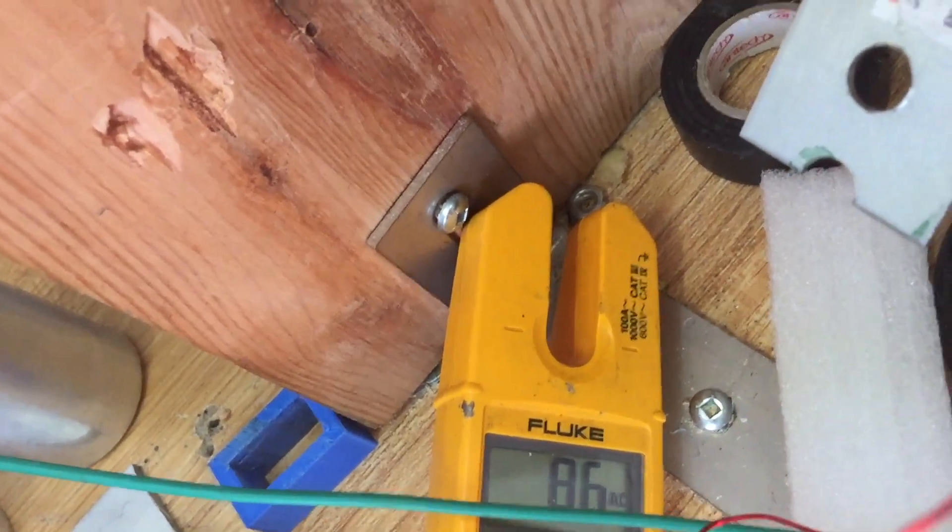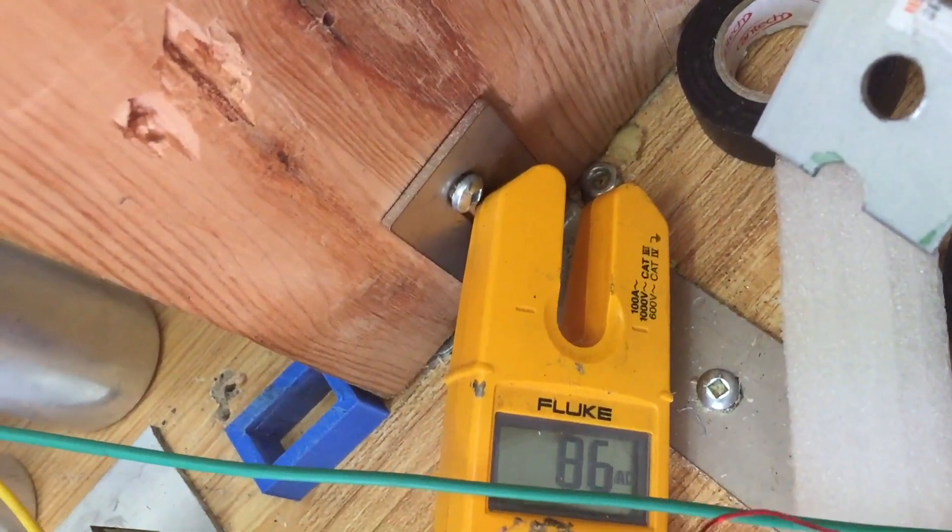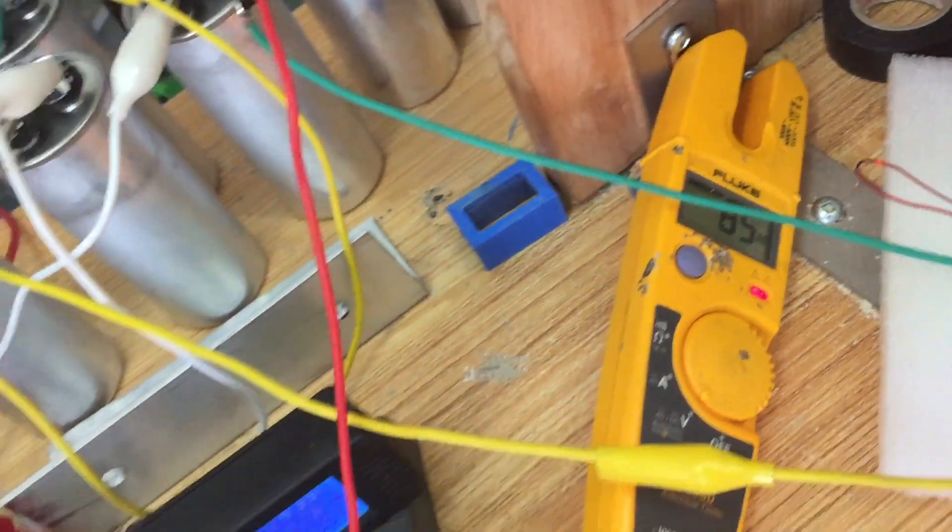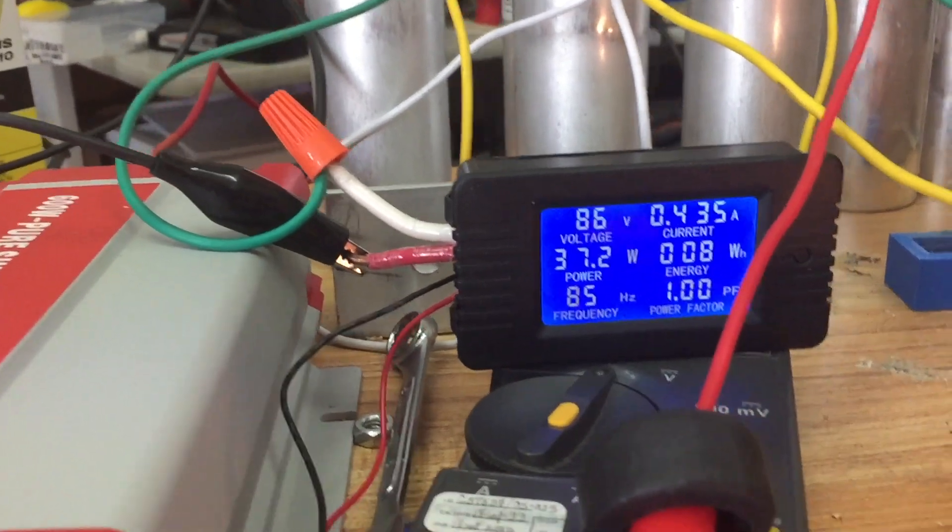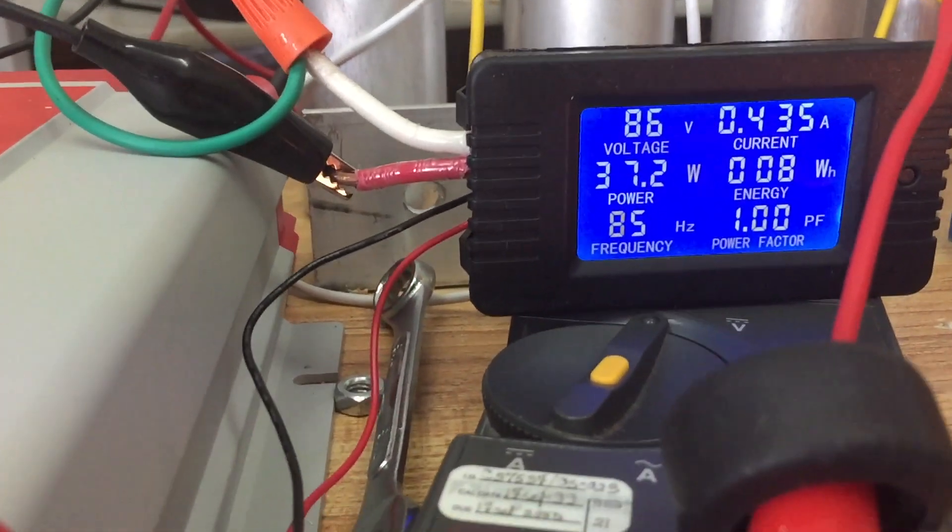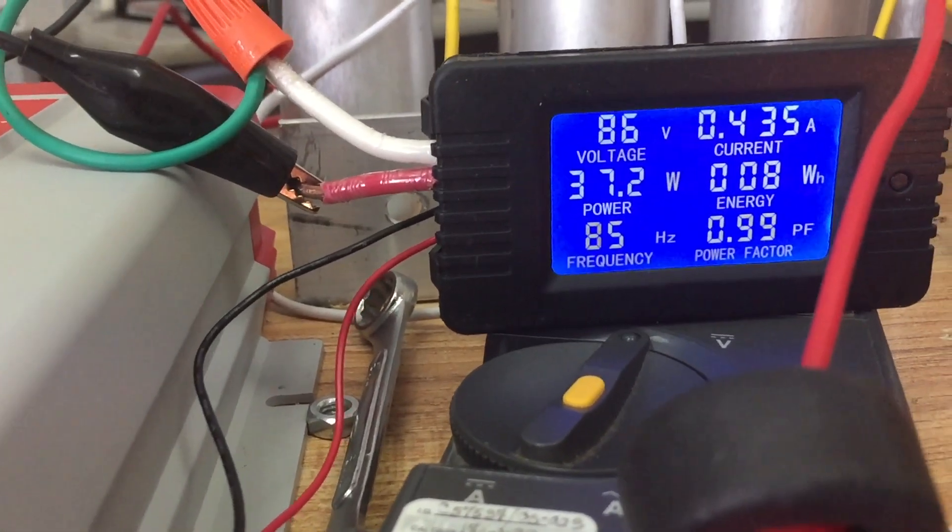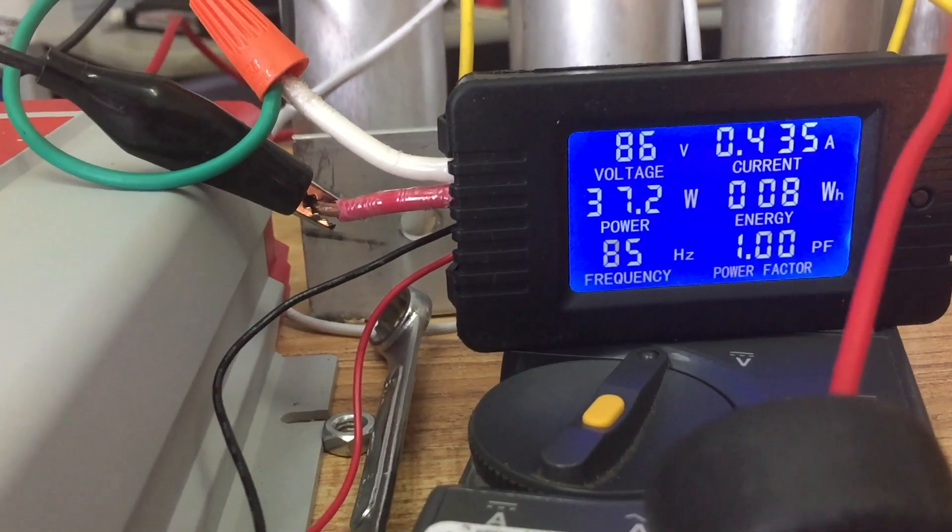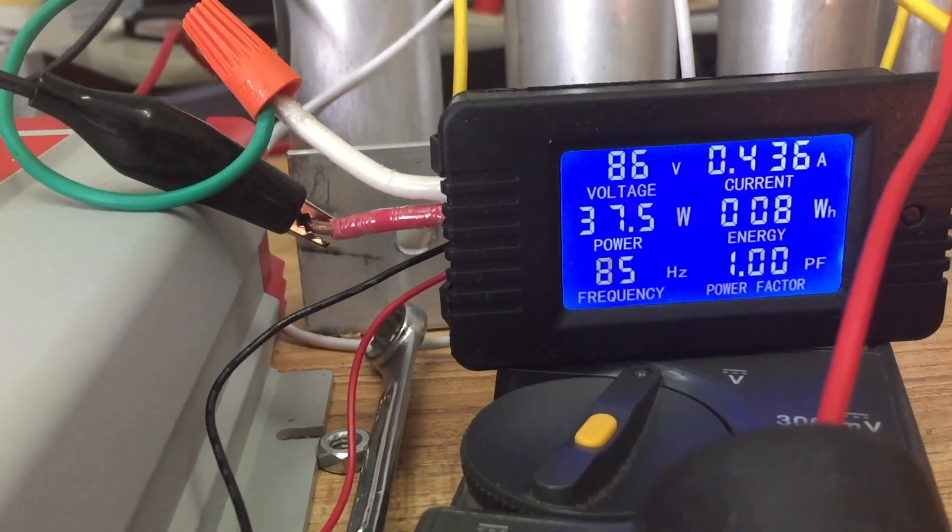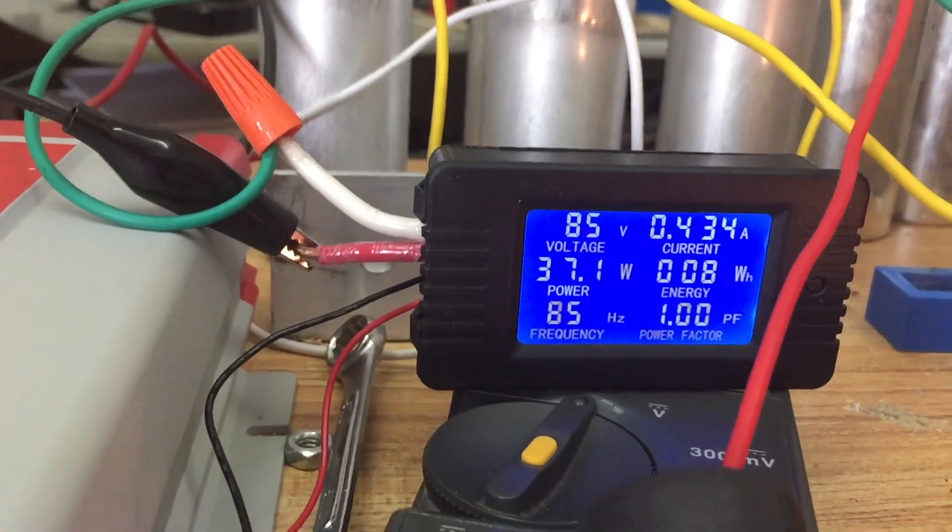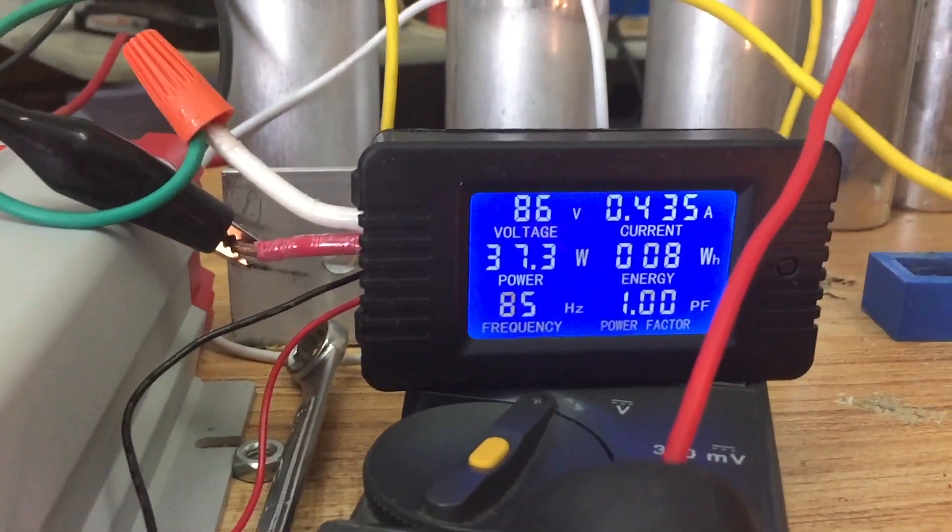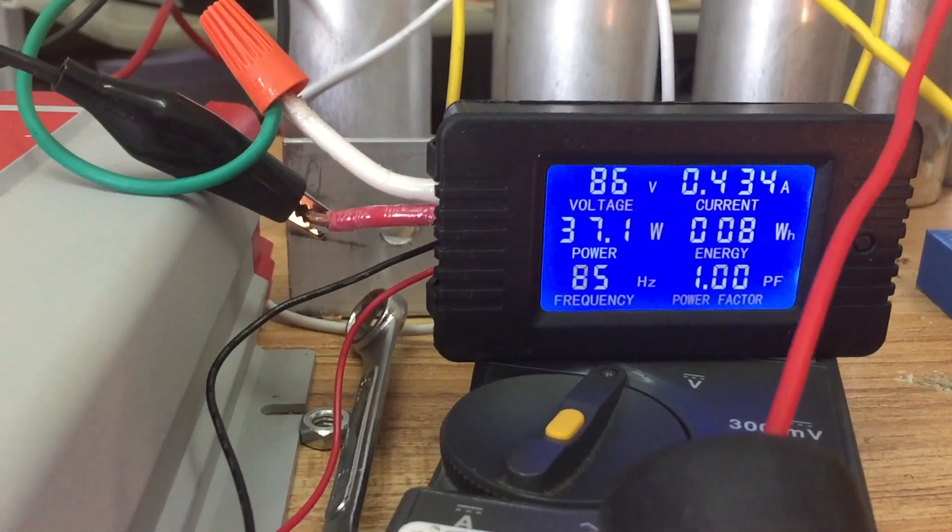I got 86 volts, so I dropped from 143 to 86, and the amps are 0.43, and I have 37 watts, which is the 86 multiplied by the 0.43 amps, and the frequency is 85 hertz.